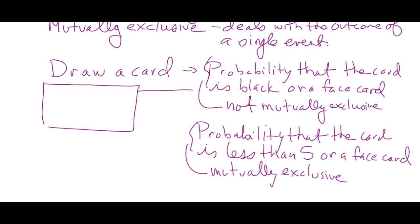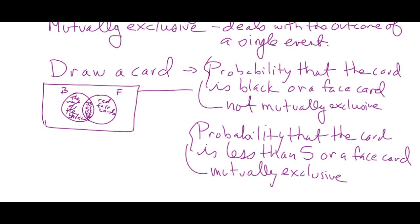If you say, what would this look like as a Venn diagram? If it is not mutually exclusive, then there's an overlapping region. In the case of black card or face card, we have the jack, queen, king of spades and jack, queen, king of clubs in the overlap. This is black cards and this is face cards. Here we've got the red face cards, and here the rest of the black cards. Not mutually exclusive — overlap — because there's an AND region. The overlap is the AND: it's a black card AND a face card.